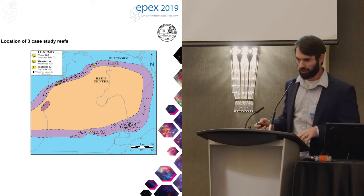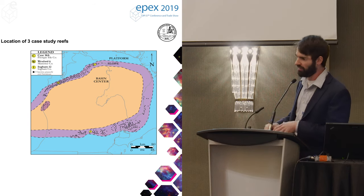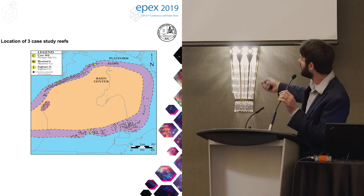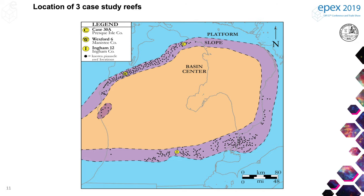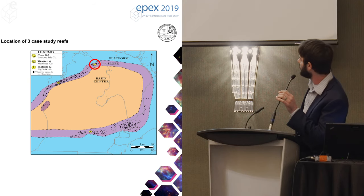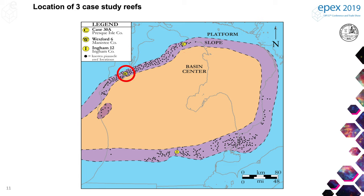Here are the three fields we're going to work around the basin with. We're going to start up here in Presque Isle County and look at this reef. This purple outline shows all the known discovered reefs in Michigan, and you can see how they certainly are part of Ontario's play as well. Being more towards the middle of the basin, we do get a little bigger and taller reefs in our state. Then we're going to go over here to the northwest side of the state, and we'll end down here in the south.